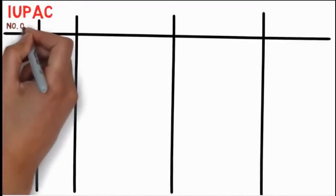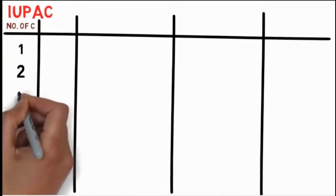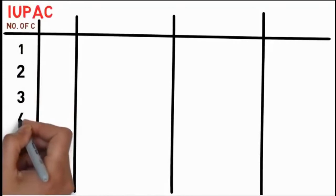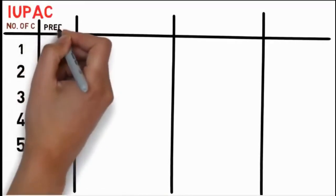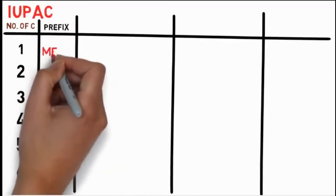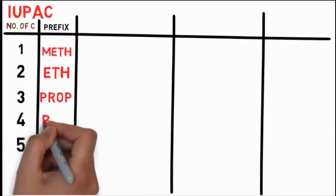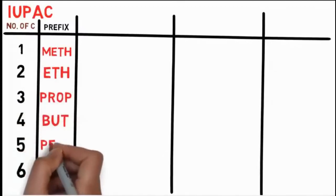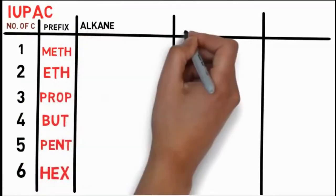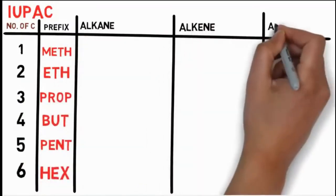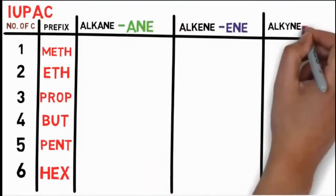Names of compounds are based on the number of carbon atoms present in them. For 1, 2, 3, 4, 5, and 6 carbons, you have different prefixes: meth, eth, prop, but, pent, hex and so on. There are 3 families: alkanes, alkenes and alkynes. They have their own suffixes: ane, ene and yne.